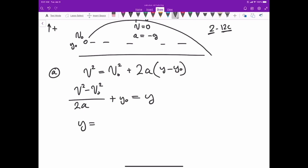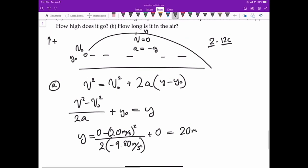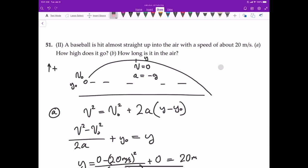We know that the final velocity is going to equal zero at the top of the curve. So zero equals negative 20 meters per second squared. Another thing is that the initial distance is equal to zero, and the acceleration is negative 9.8 meters per second squared. The final height, or how high does it go, is going to equal 20 meters. So y equals 20 meters.